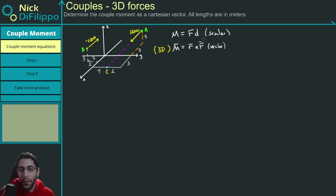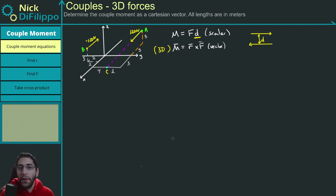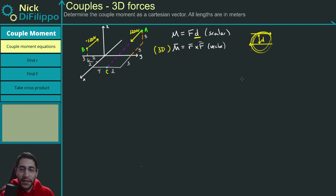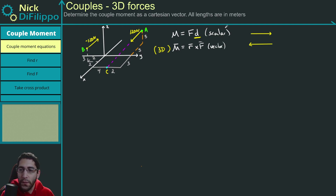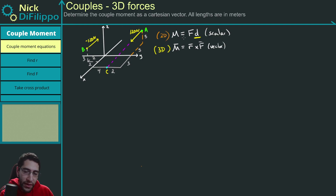The reason is the scalar equation has this D term, which is the perpendicular distance between your two vectors. In 3D space, it's usually very difficult to figure out what that perpendicular distance is because the vectors are in three dimensions, and sometimes it's extremely complicated to find that distance. So in 3D, I always suggest using the vector approach. When working with a 2D problem, I normally try the scalar equation first, but if I run into problems, I go to the vector equation.